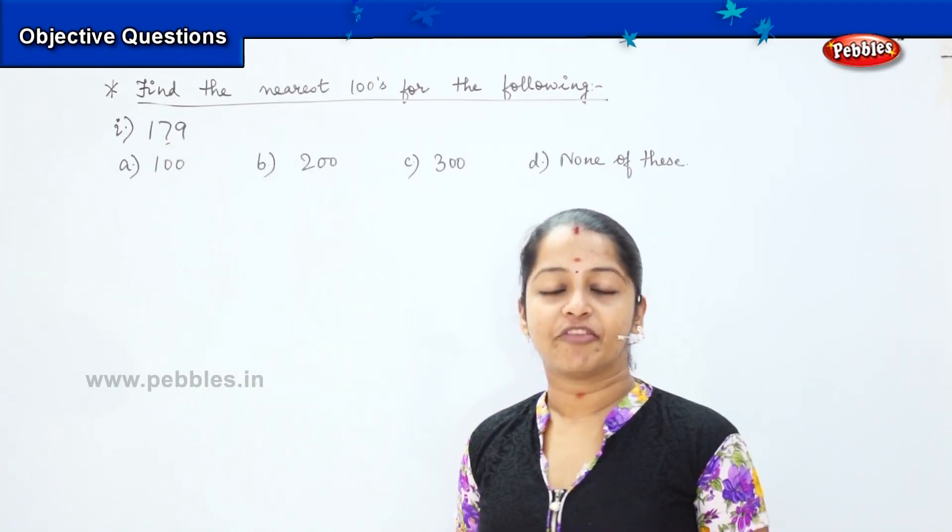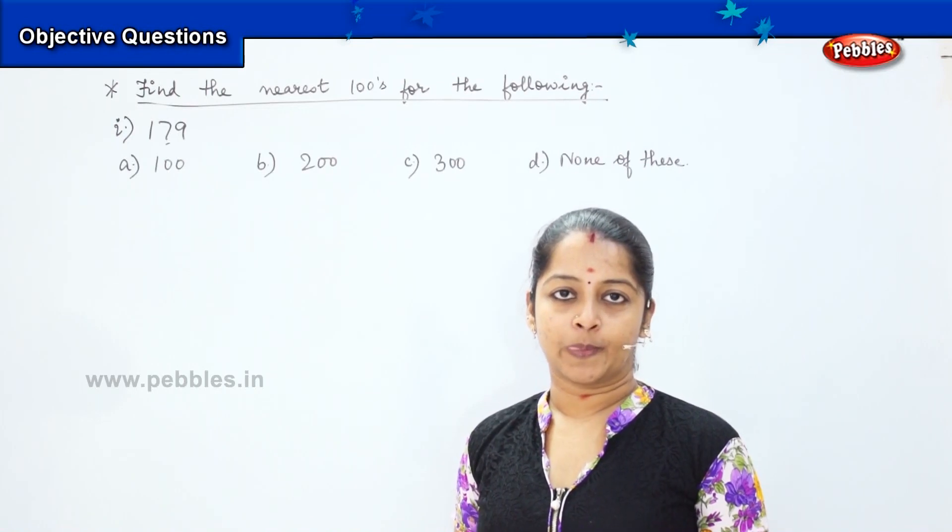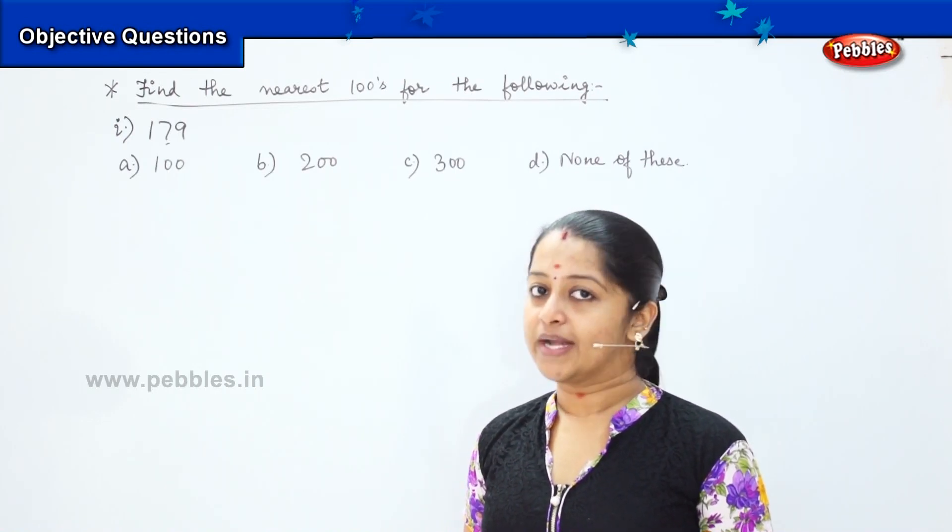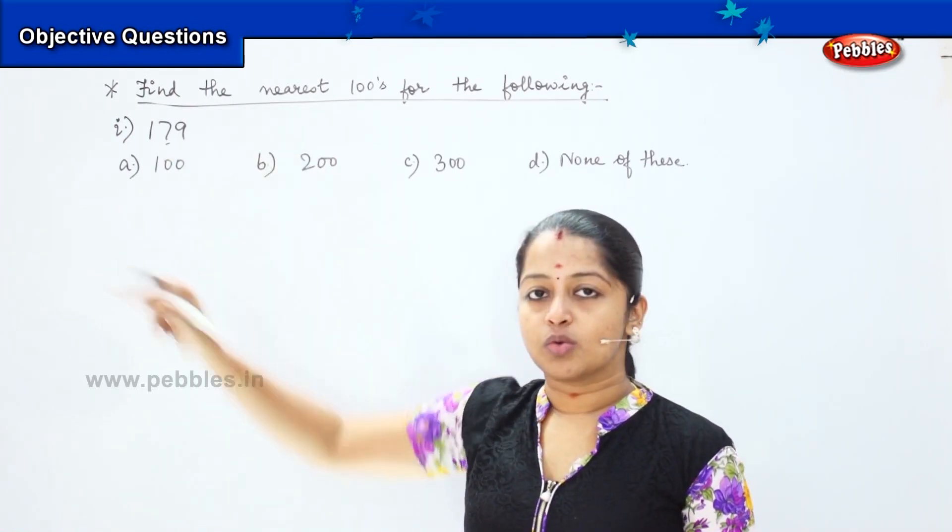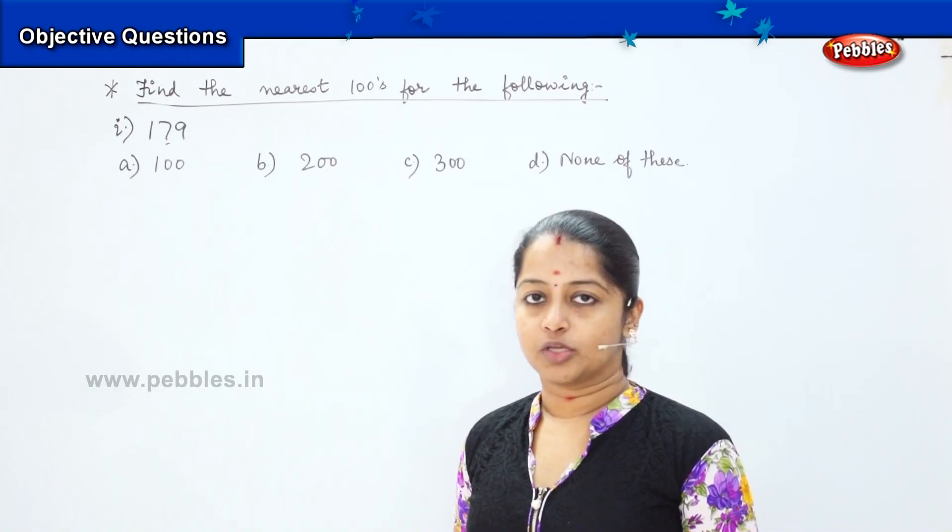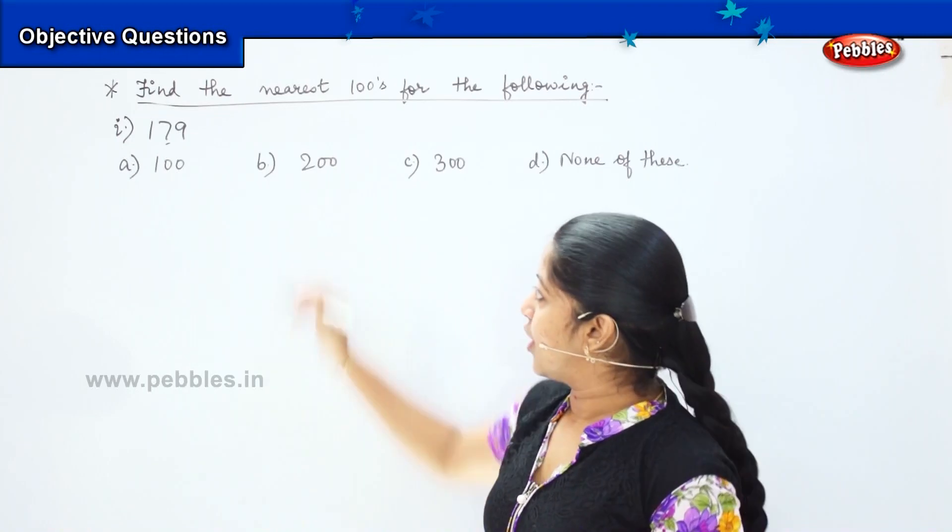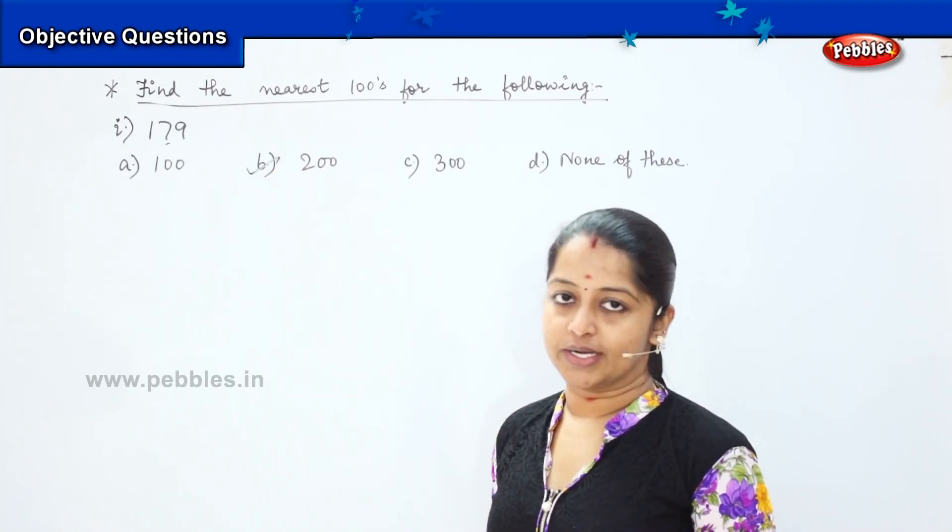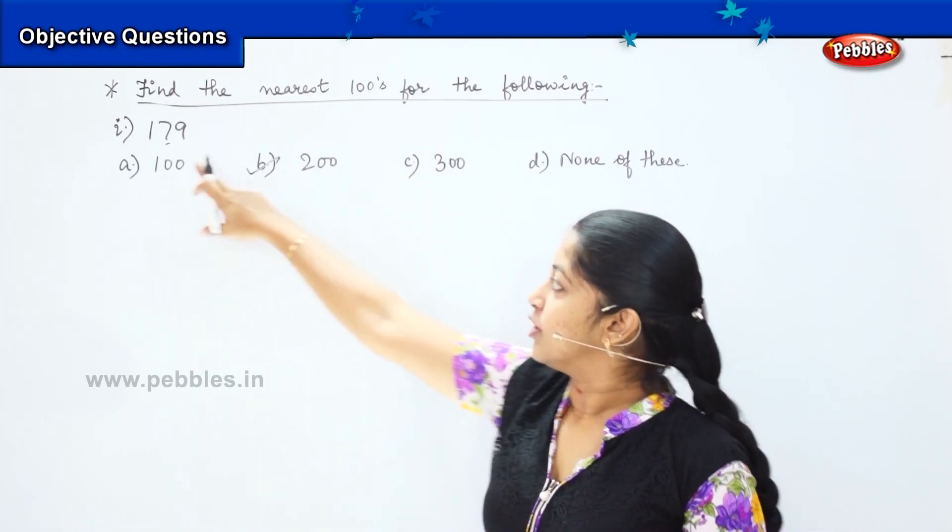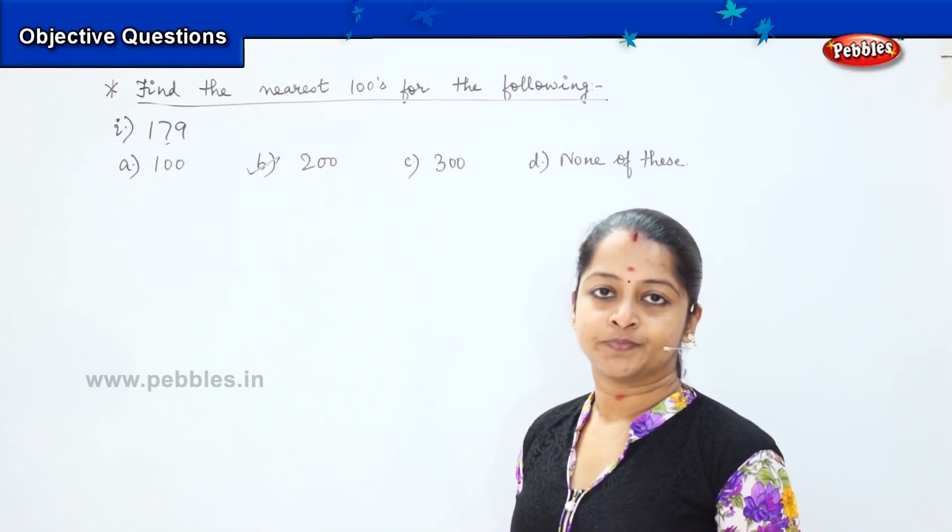Is 7 greater than 5 or less than 5? Good, it is greater than 5. So we are going to round it off to the next level. After 1 what will come? It's 2, right? So your right answer will be 200. The nearest hundreds value for this number is 200. Got it?